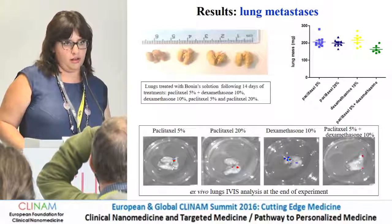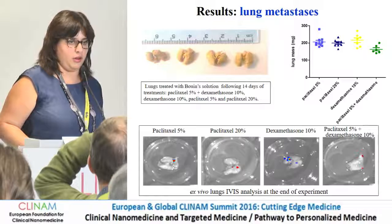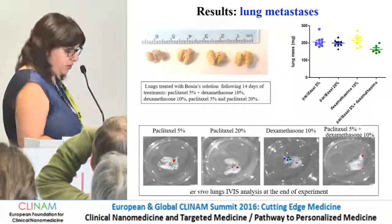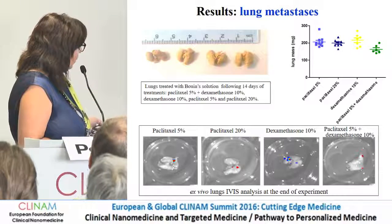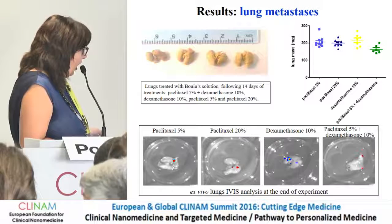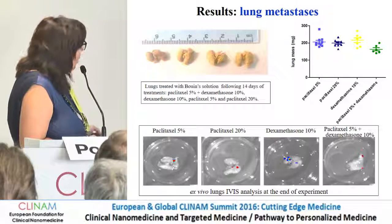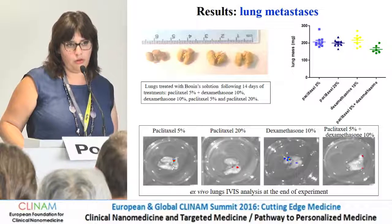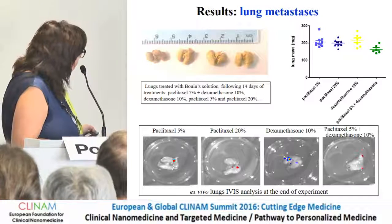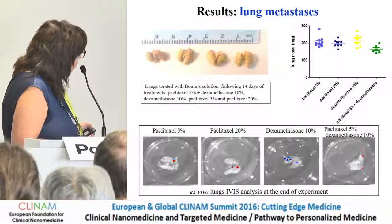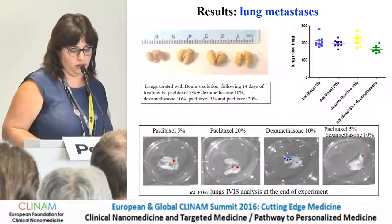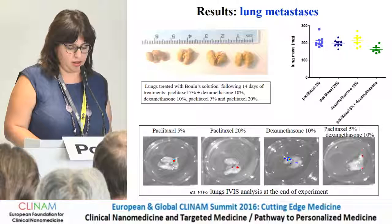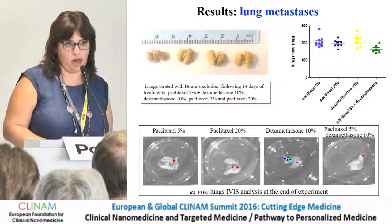We looked at the lungs to determine whether there was any difference in the formation of metastasis. We imaged the lungs ex vivo using the imaging system — those are the metastases. We also treated the lungs with a Bouin's solution, which changes the color of the lung to a yellowish color so we can see the metastases visually. There was no significant difference in lung metastasis formation or lung mass between the groups.